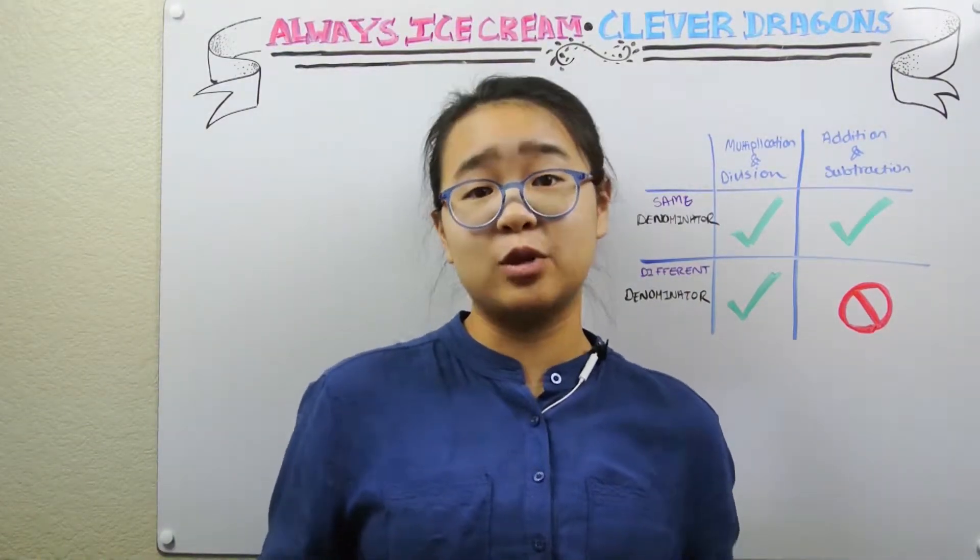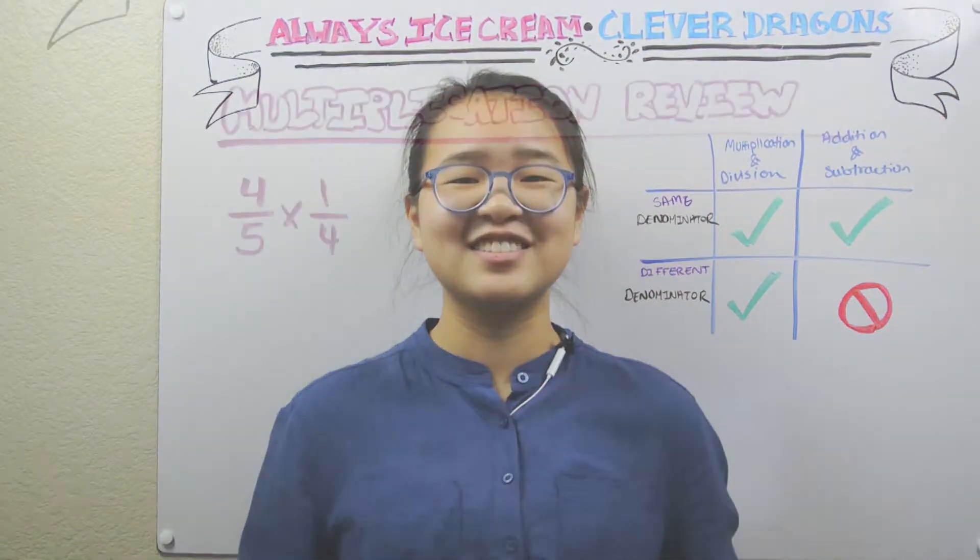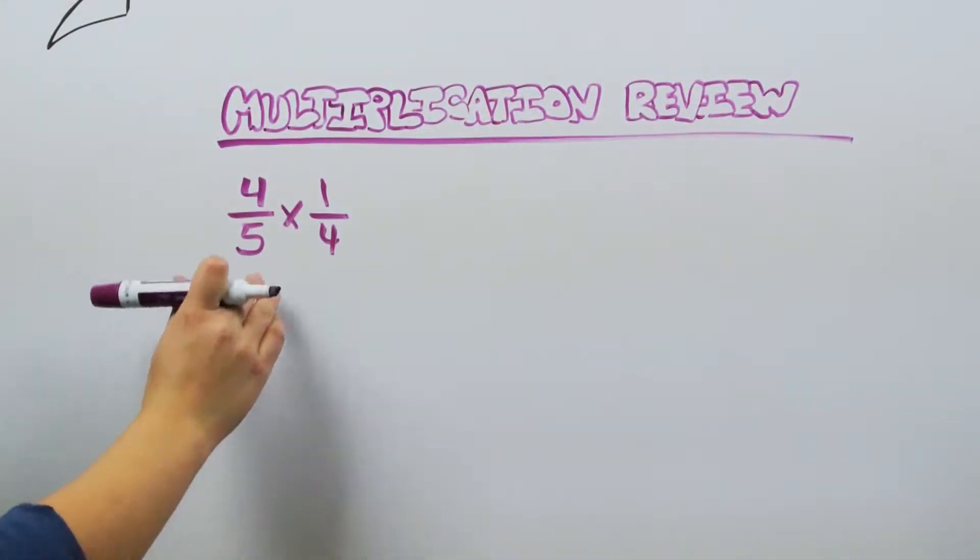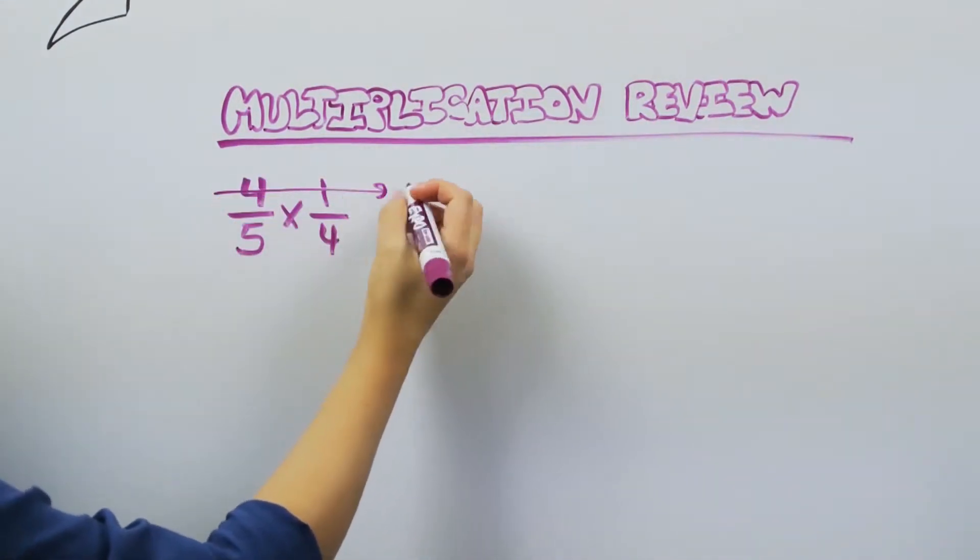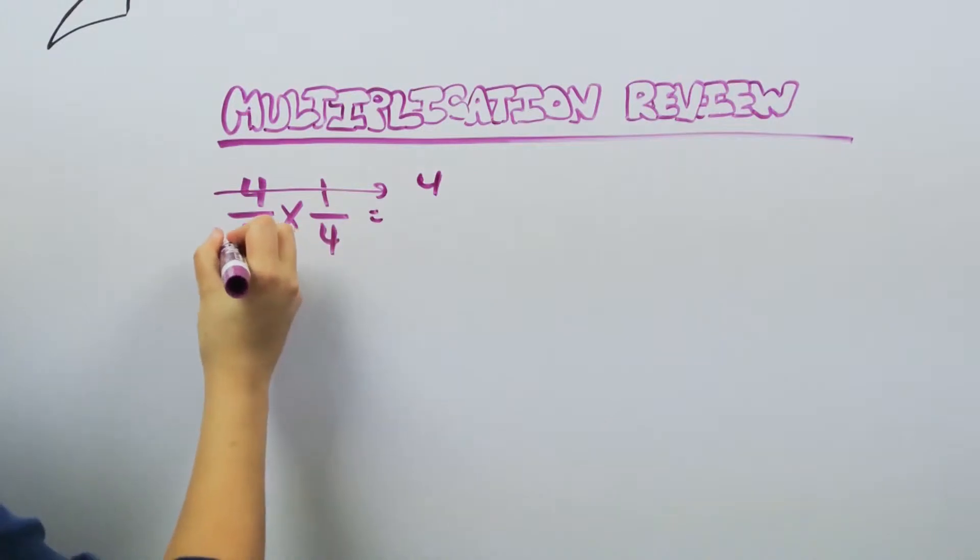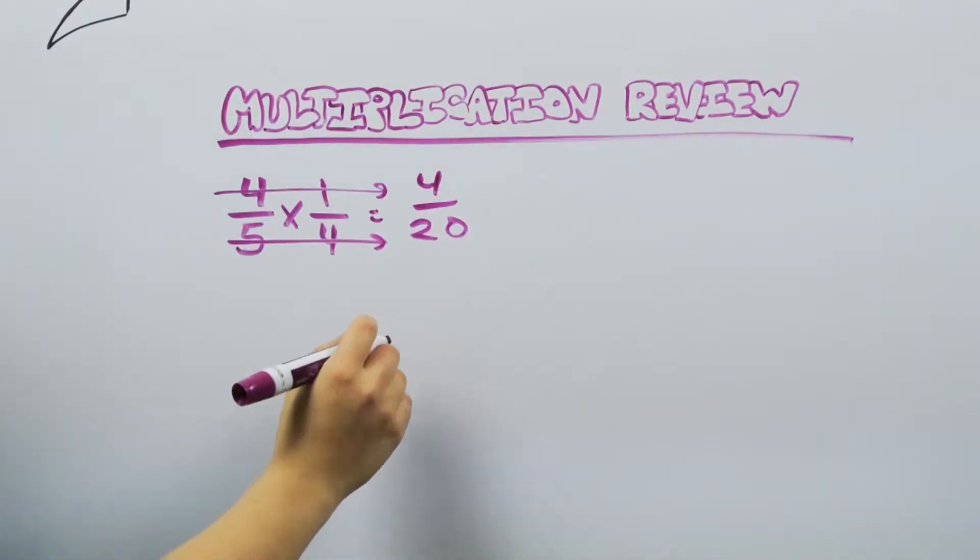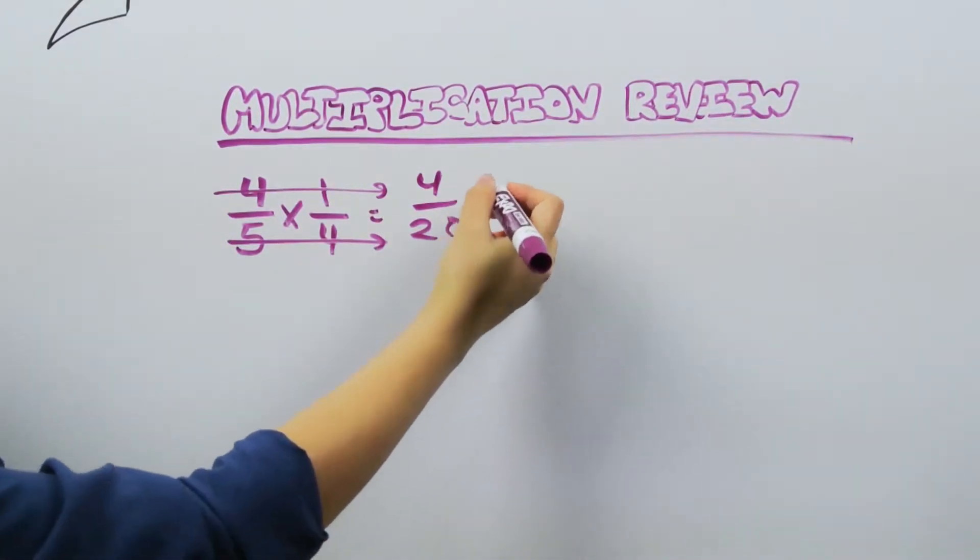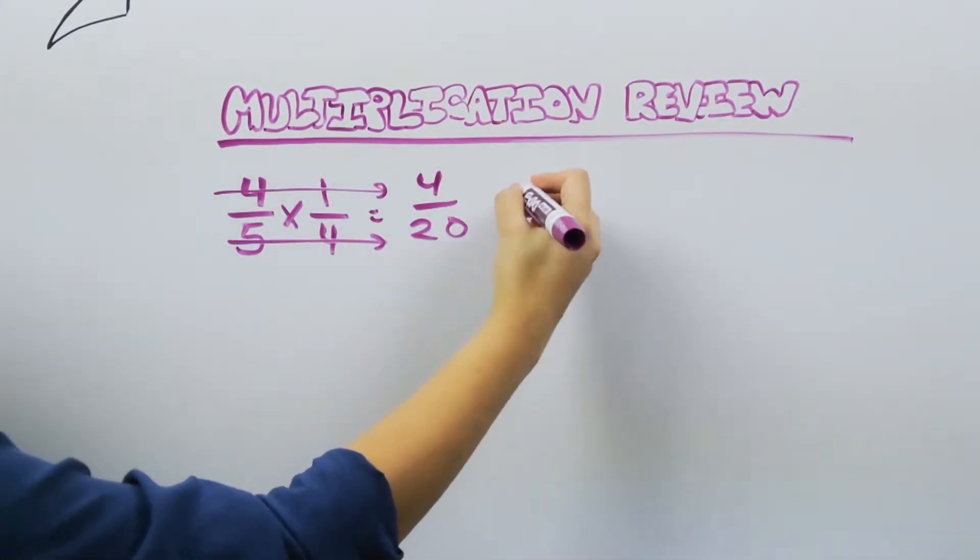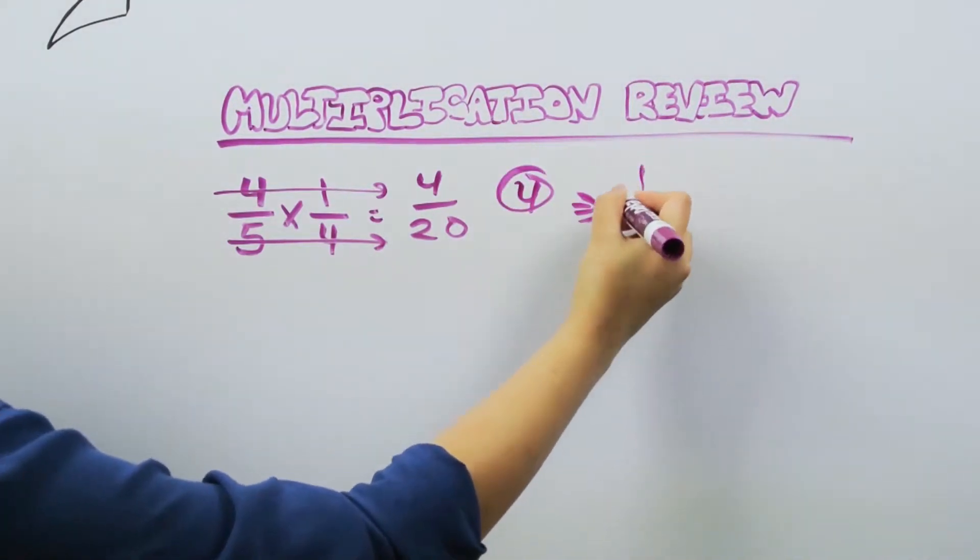But first, let's take a quick review of multiplication, since it's important to understand how to divide fractions. Let's say that we are multiplying 4/5 by 1/4. So we multiply across the top numbers to give us 4, then across the bottom to give us 20. But wait, we always reduce our fractions at the end. And if you notice, both 4 and 20 are products of 4, so we can really reduce this down to 1/5.